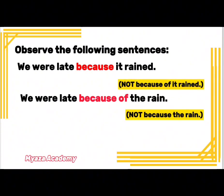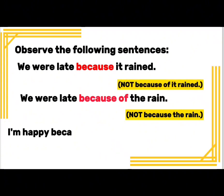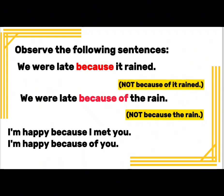Notice that in the upper sentence, 'because it rained' — 'it rained' is a subject and verb. In 'because of the rain,' 'the rain' is a noun. Similarly: 'I'm happy because I made you' uses a clause, while 'I'm happy because of you' uses a noun. I hope you have understood this video — we'll meet in the next video.